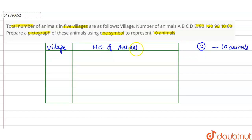So for first village, for village A, there are how many animals? 80 animals. So we have to make 8 such symbols: 1, 2, 3, 4, 5, 6, 7, 8.